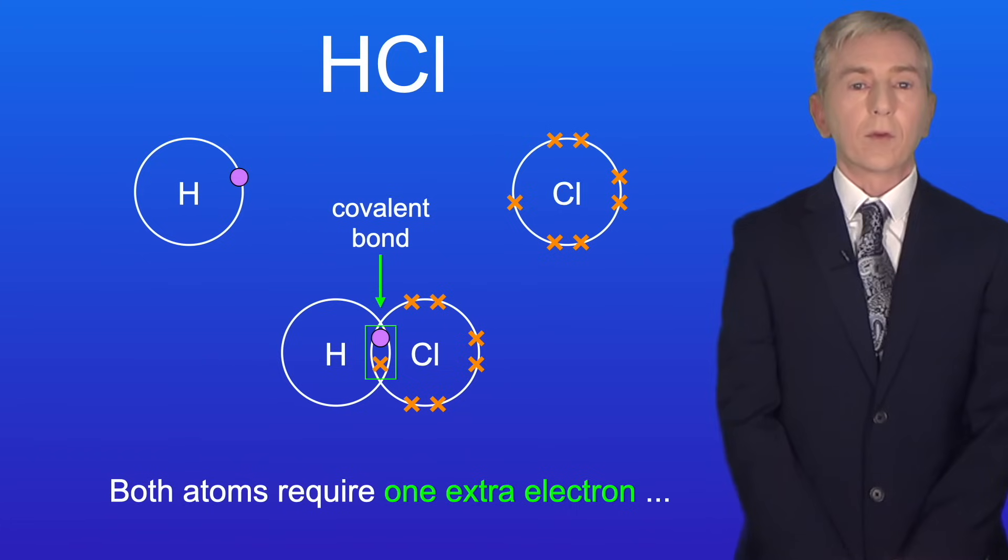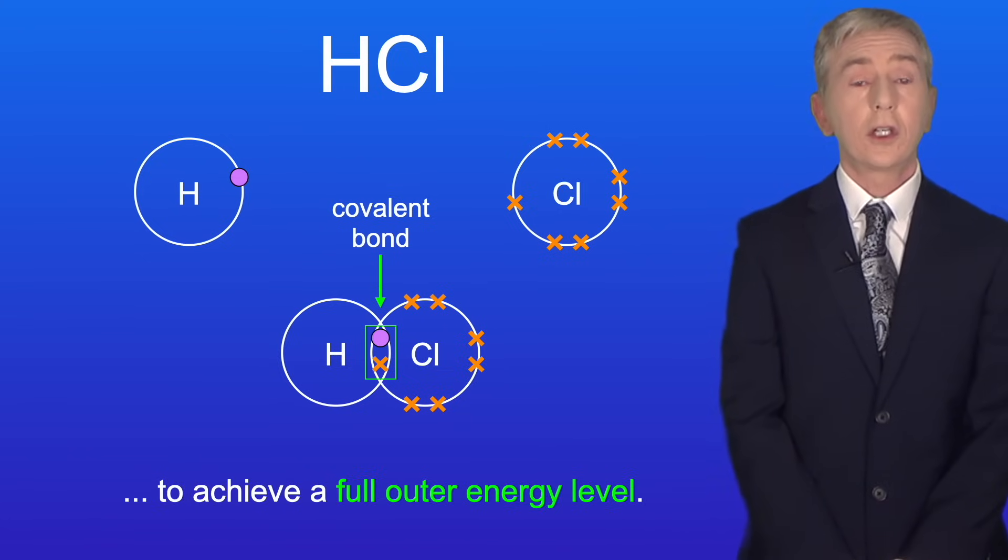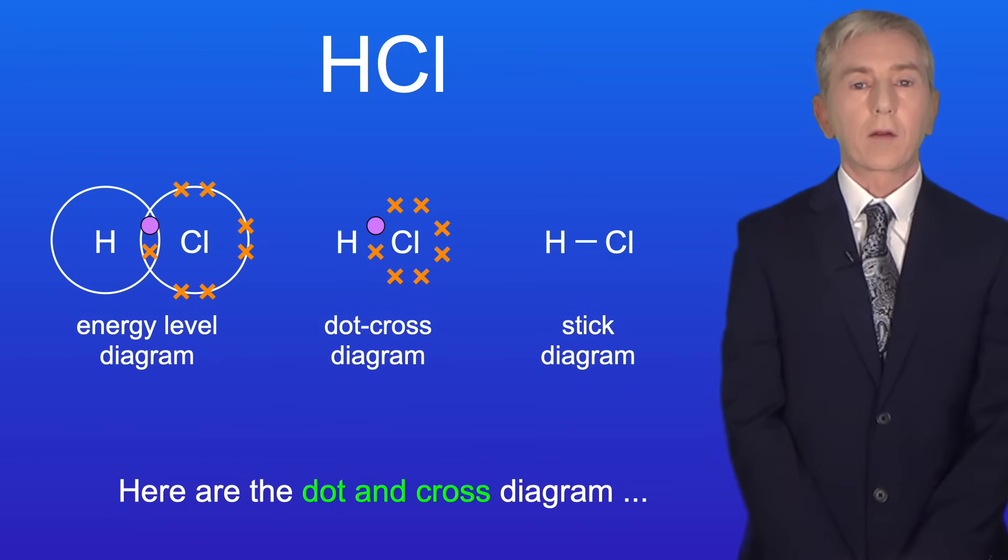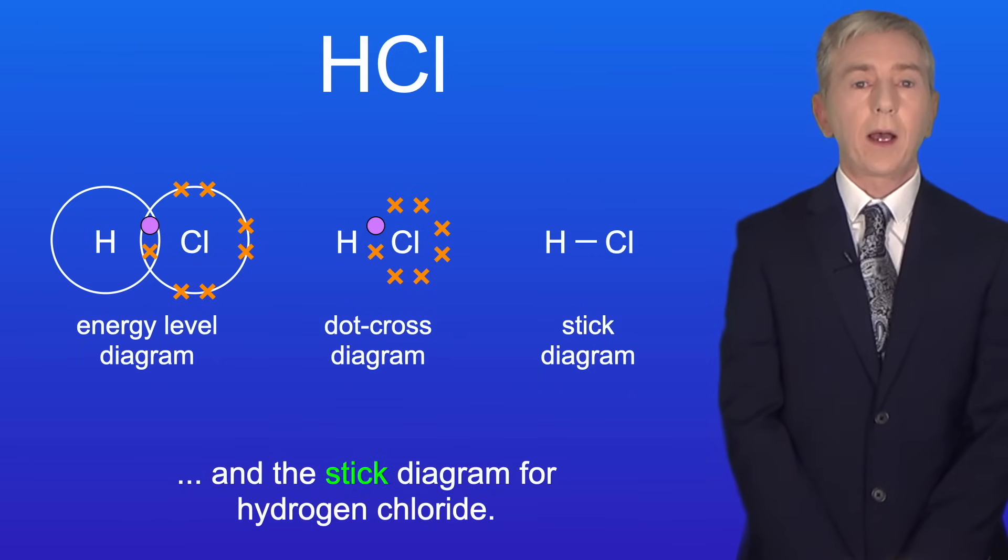Okay, both atoms require one extra electron to achieve a full outer energy level. And they do this by overlapping their outer energy levels like this. Here are the dot and cross diagram and the stick diagram for hydrogen chloride.